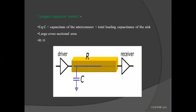The first one is the lumped capacitor model. As the name suggests, in this lumped capacitor model we consider the capacitance only, not the resistance. The existing capacitance is due to the capacitance of the interconnect and the total loading capacitance of the sink. This is the source, which is the driver, and the sink is the receiver. The capacitance due to the interconnect and the loading capacitance of the sink are lumped into an equivalent capacitance C.